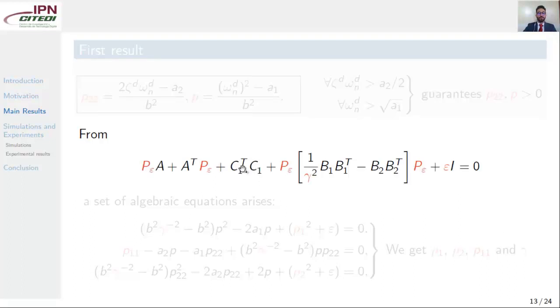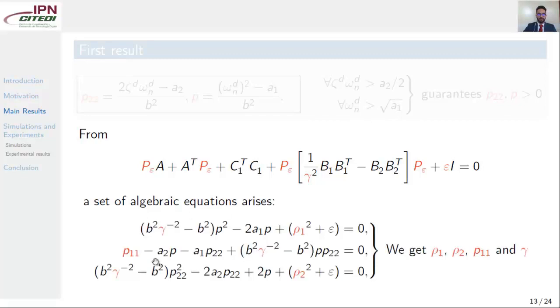From the algebraic Riccati equation, a set of algebraic equations arises, as shown here. From here, we get rho1, rho2, p11, and gamma, the remaining parameters to complete the design.